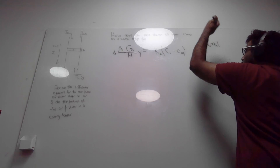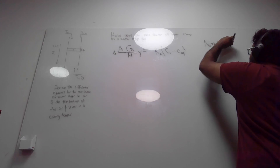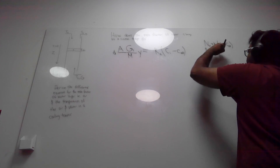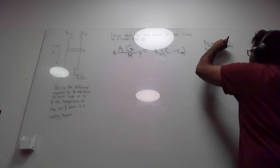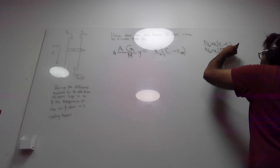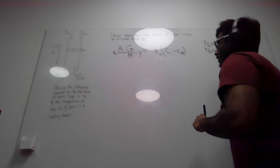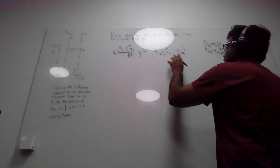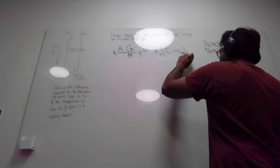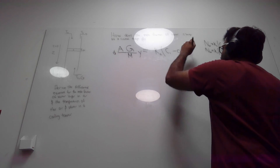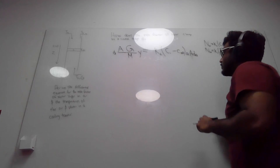We can also express the molar flux of water vapor Nw as the mass transfer coefficient times the partial pressure of saturated water at Tw divided by RT, minus the mole fraction of water times the partial pressure divided by RT. Going back to deriving the differential equation, we multiply this expression by the specific area and then by the differential volume a·dz.